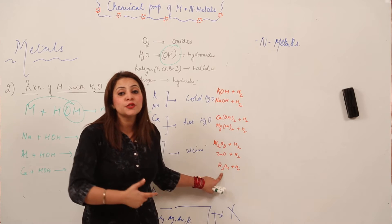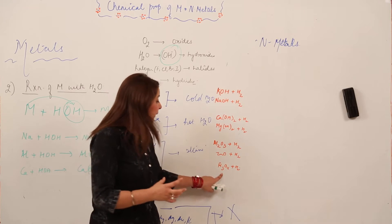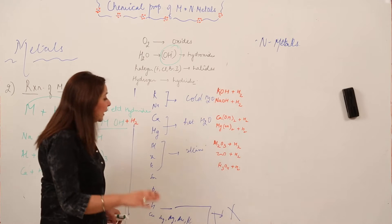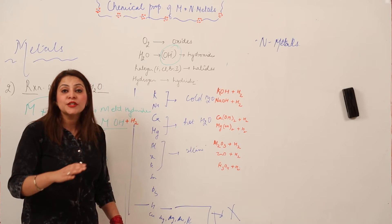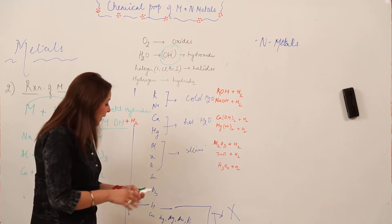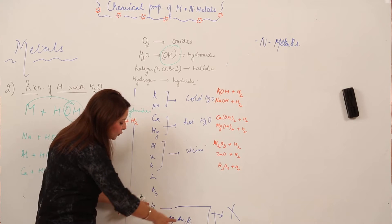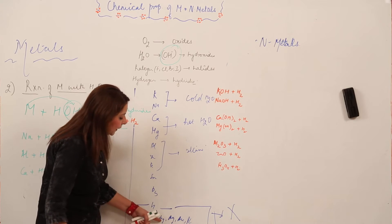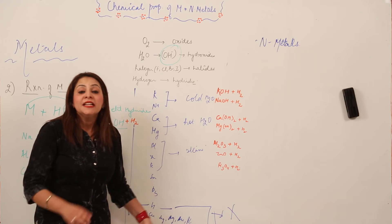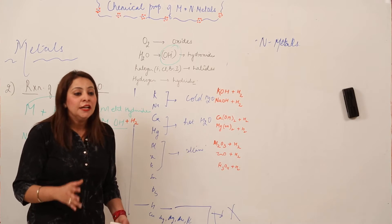This is a question which you often get in papers, so just be thorough with this answer. Now, there are few metals which do not react with water in any case. Those are the metals placed below hydrogen: copper, mercury, silver, gold, and platinum. They do not react with water in any case.